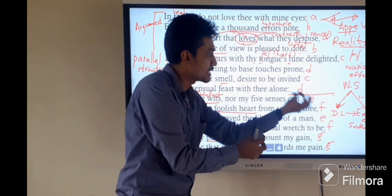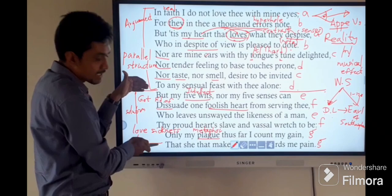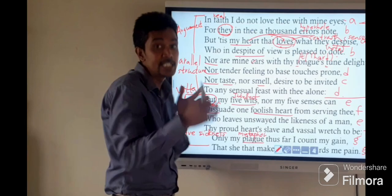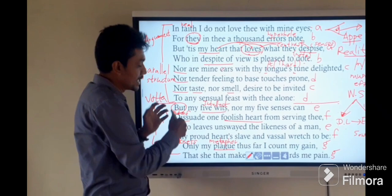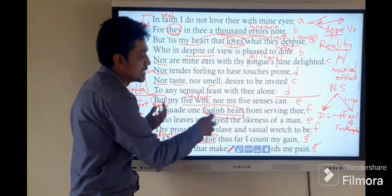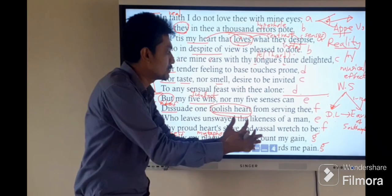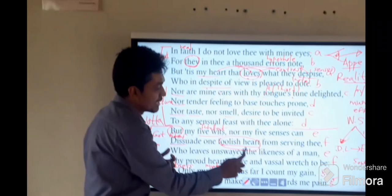From the sestet, we can understand this is what we call volta. Volta means the changing point of the argument. But my five wits, five wits is the intellect, from the five intelligence, nor my five senses can dissuade one foolish heart. The heart has an enthralling attraction to the dark lady from serving thee, who leaves unswayed the likeness of a man.